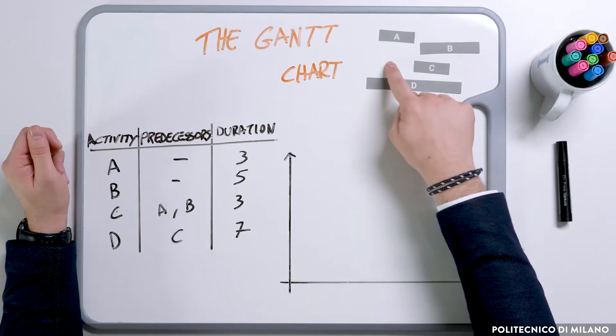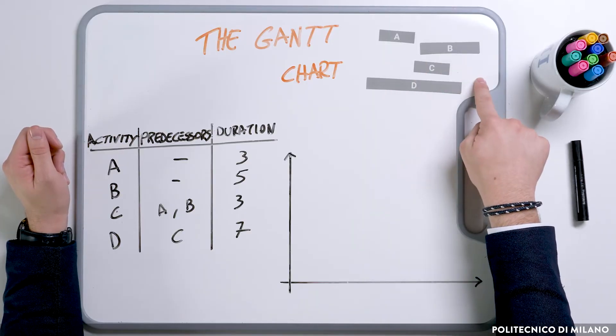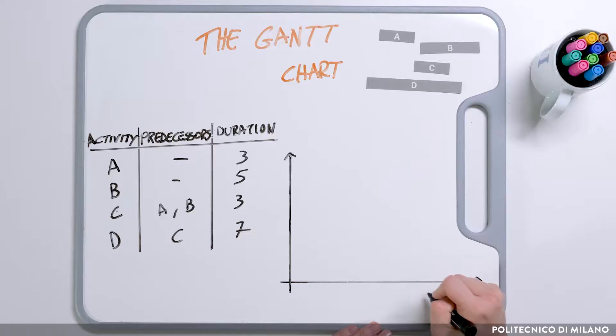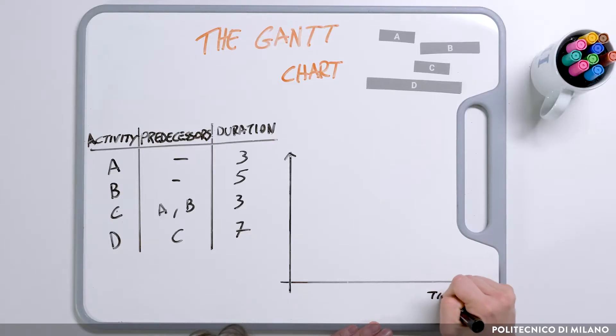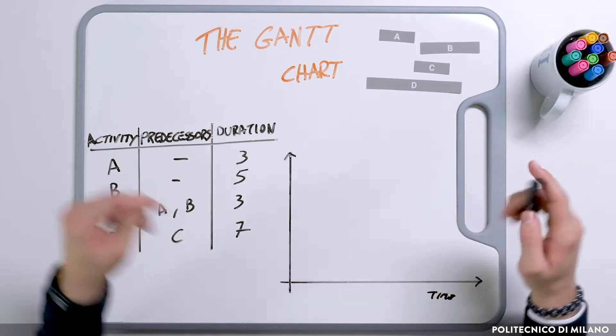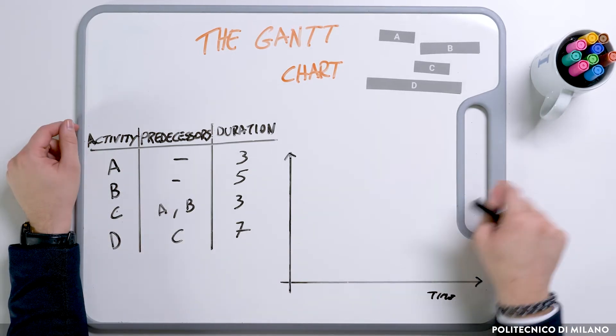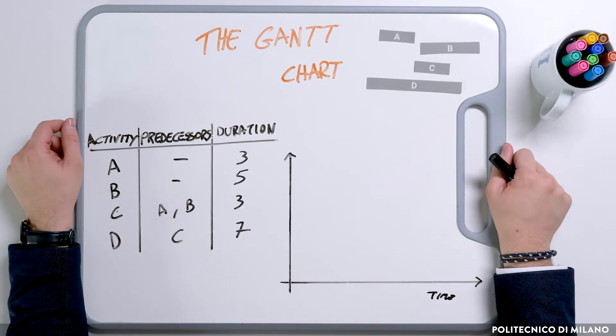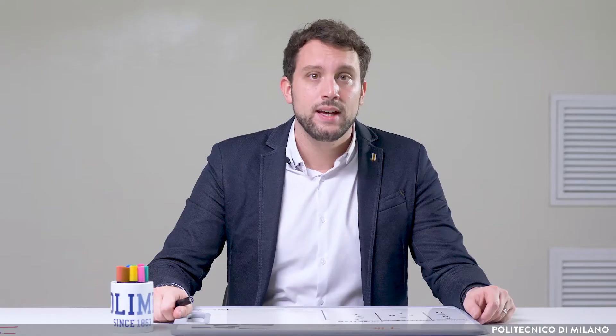Now we can build a Gantt chart with a bar for each activity. It is a very simple tool which has the time on the horizontal axis, and bars on the vertical axis representing the various activities. Let's build a simple example through the numbers in the table.